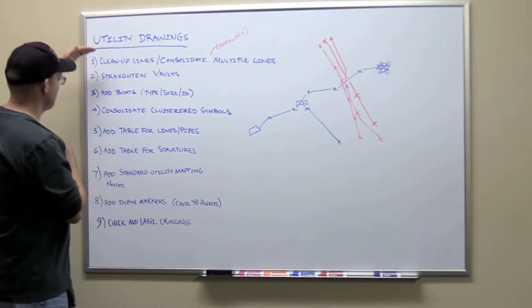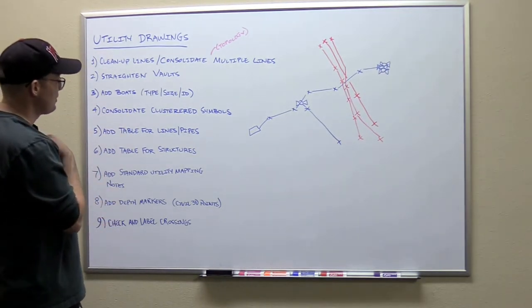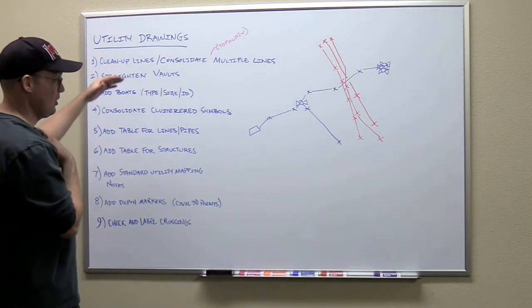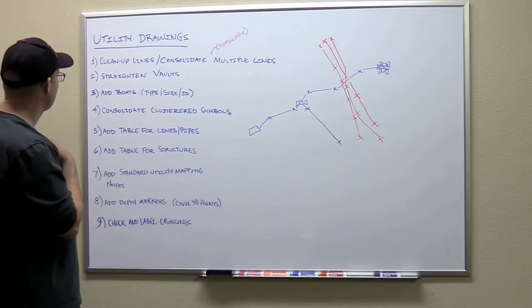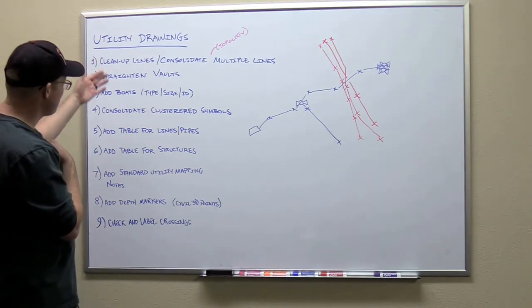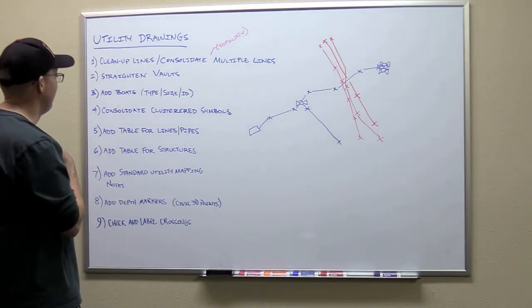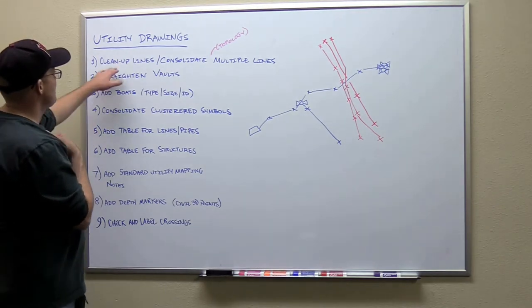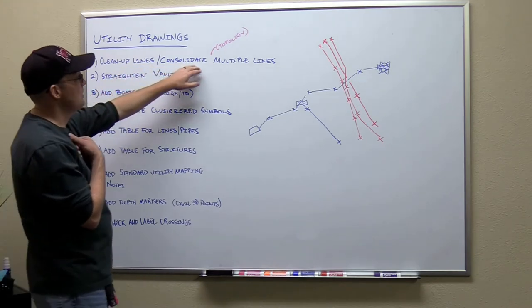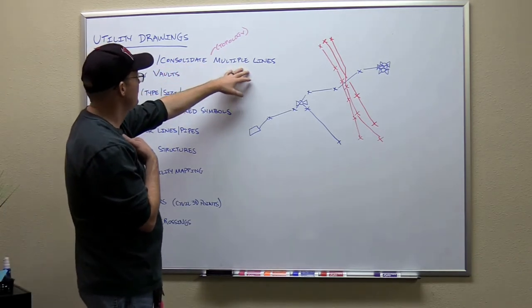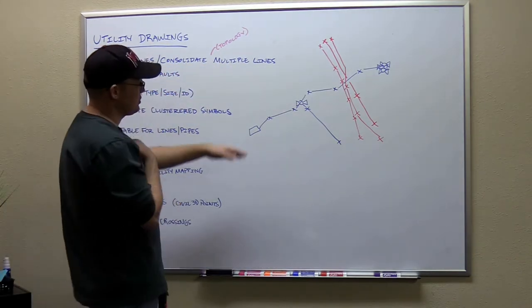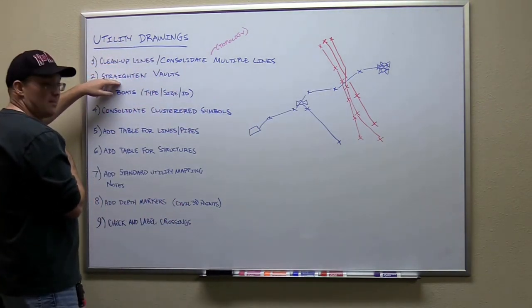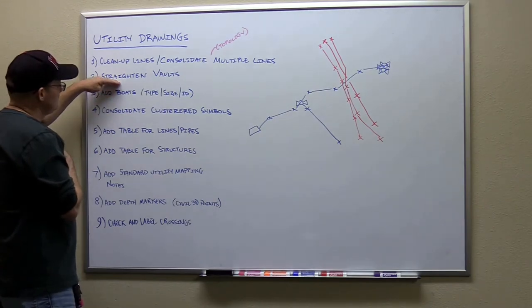I'm going to walk you through this list of stuff to do, and you're going to have to come and get me — you're not going to remember all this, but we're going to talk about all of it. It doesn't necessarily have to be in order but this order works. The first thing you're going to do is go up and clean up the lines and consolidate the multiple lines. I'll describe it, run through the list, and show you an example. We're going to clean up the lines and straighten up the vaults and vault lids.